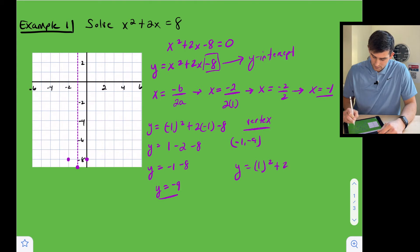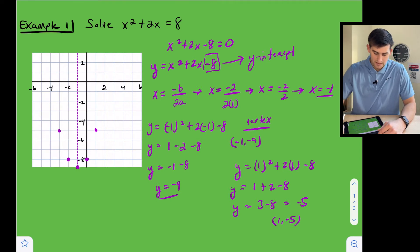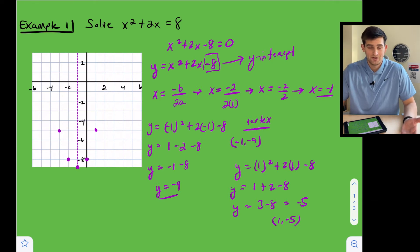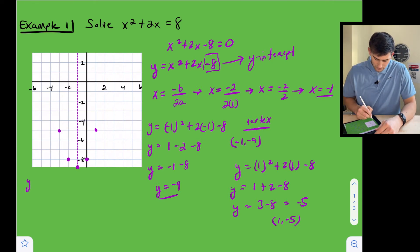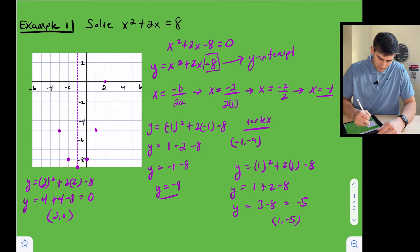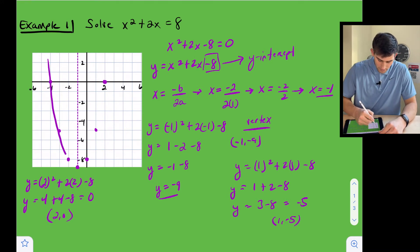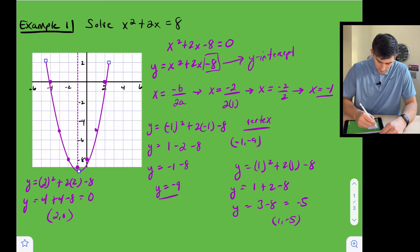We plug in x equals one: y equals one plus two minus eight, so y equals three minus eight, which is negative five. We have a point at one comma negative five, and we can reflect it over the axis of symmetry. We still don't know where the graph crosses the x-axis, so we plug in x equals two: y equals two squared plus two times two minus eight, giving y equals four plus four minus eight, which equals zero. So we have a point at two comma zero — an x-intercept — and we can reflect it to get the other x-intercept.